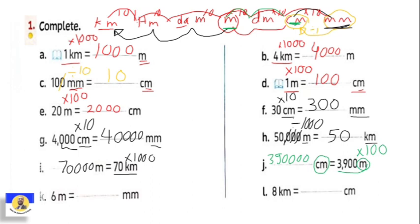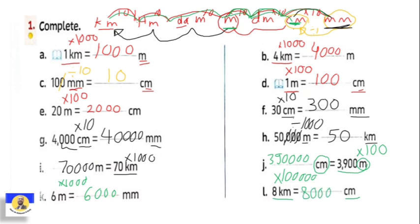From meter to millimeter: we move one, two, three steps, so we multiply by one thousand. Six meters times one thousand equals six thousand millimeters. Eight kilometers equal how many centimeters? Count steps from kilometer to centimeter: one, two, three, four, five steps — so one and five zeros equals one hundred thousand. Eight times one hundred thousand equals eight hundred thousand centimeters.